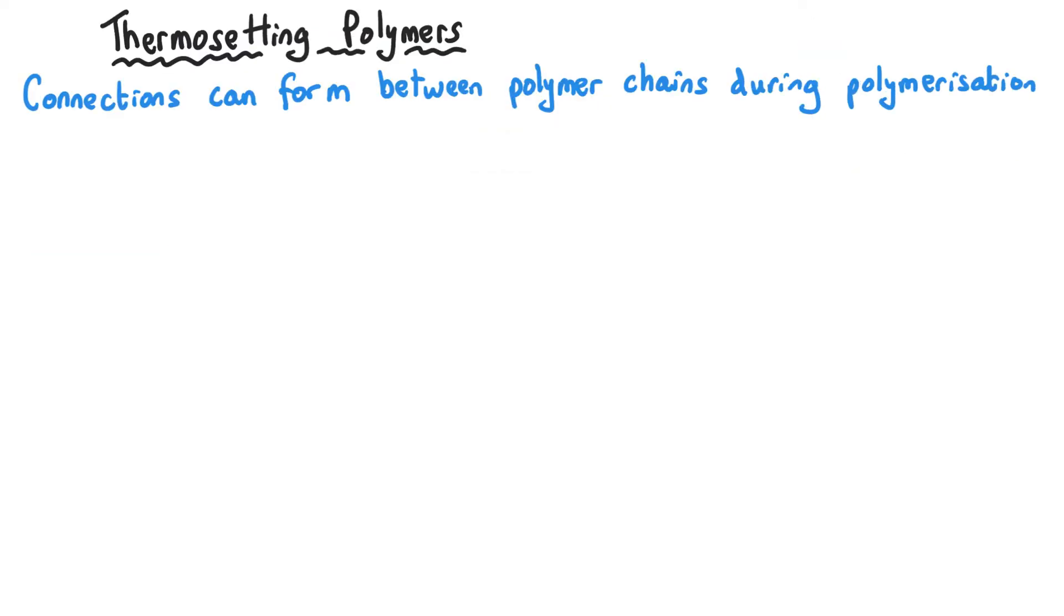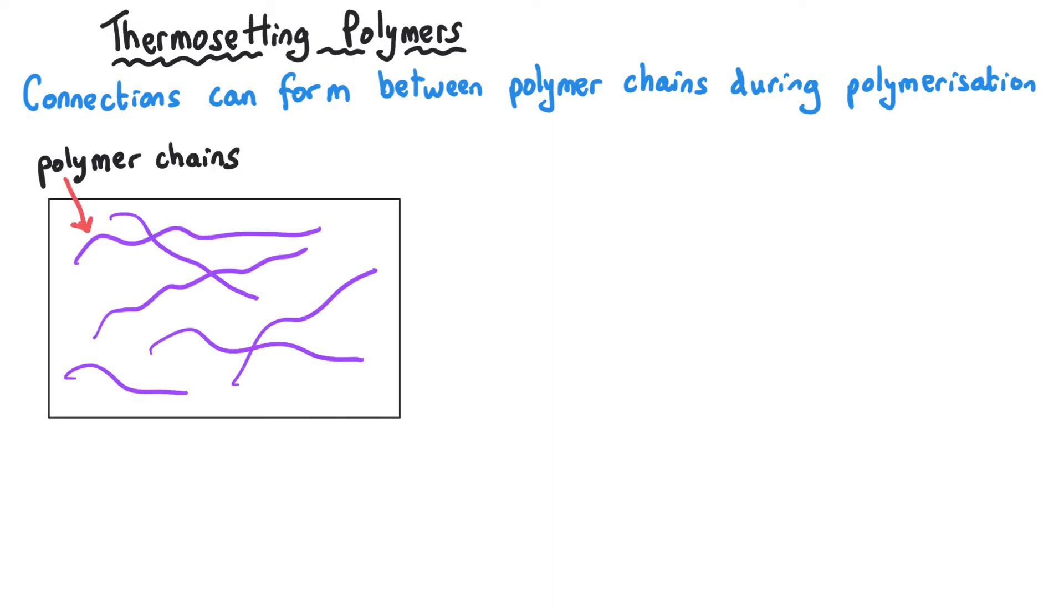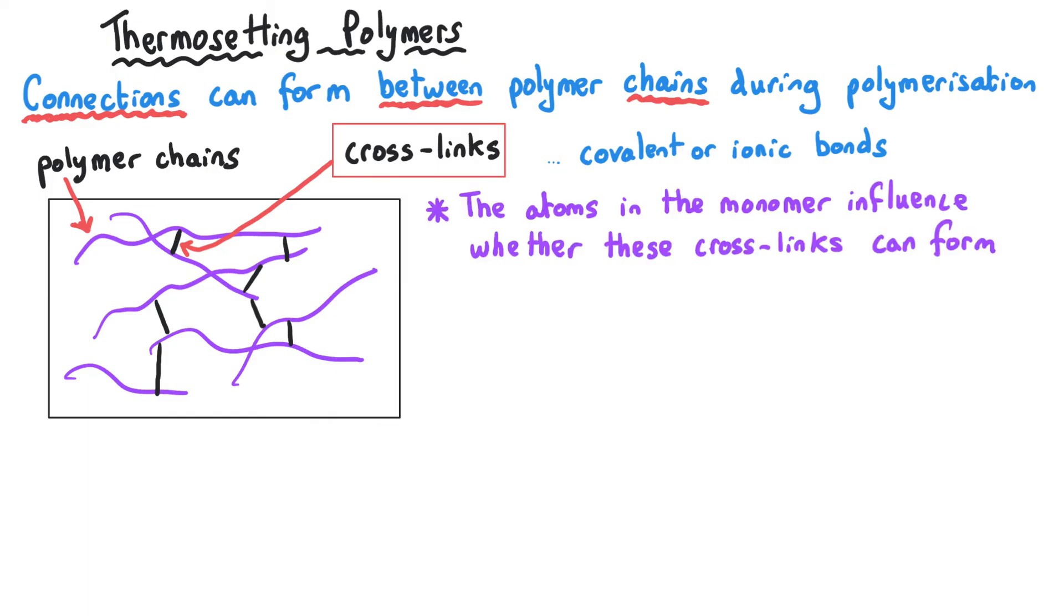One of the reasons why the type of monomer has such an impact on the properties of the polymer is that during the process of polymerization, sometimes connections can form between the polymer chains themselves. Now these connections are sometimes called cross-links, but what they normally are is a type of bond, and that might be a covalent bond or an ionic bond. It depends on the monomer. And so the specific groups of atoms in the monomer influences the polymer chain that gets produced, and then the presence of these atoms in one polymer chain that can form a bond to atoms in another polymer chain means that these cross-links will form between the polymer chains. And these cross-links have a huge impact on the properties of the polymer.